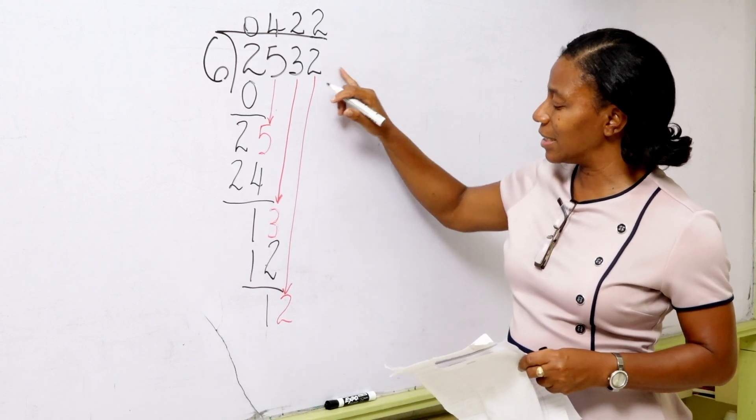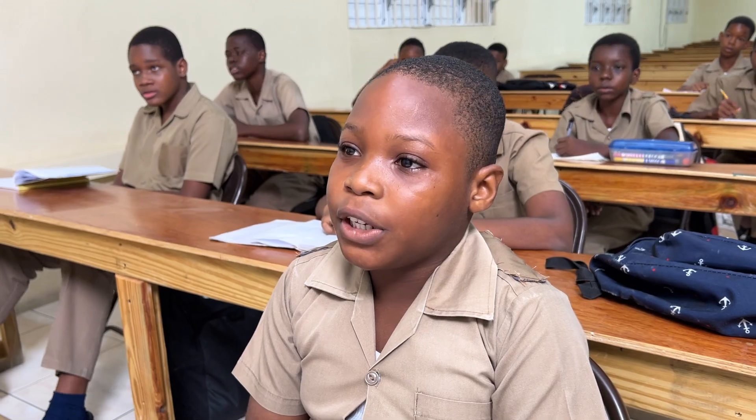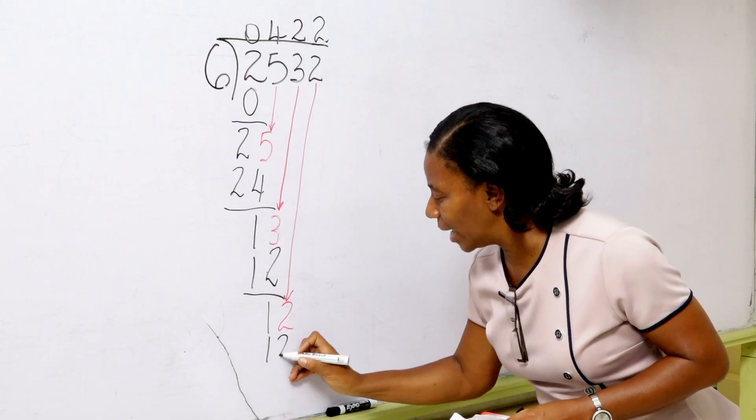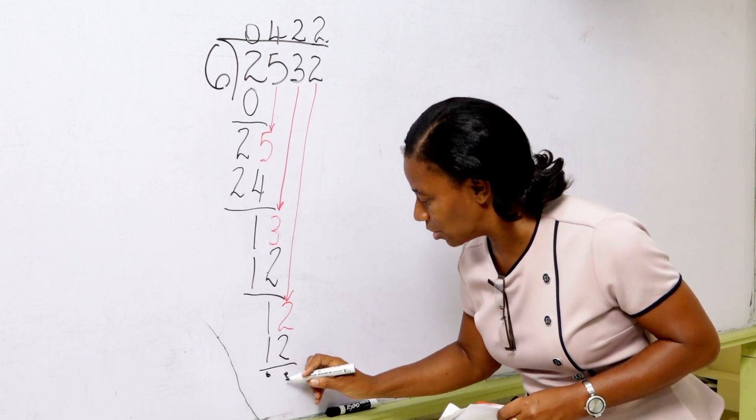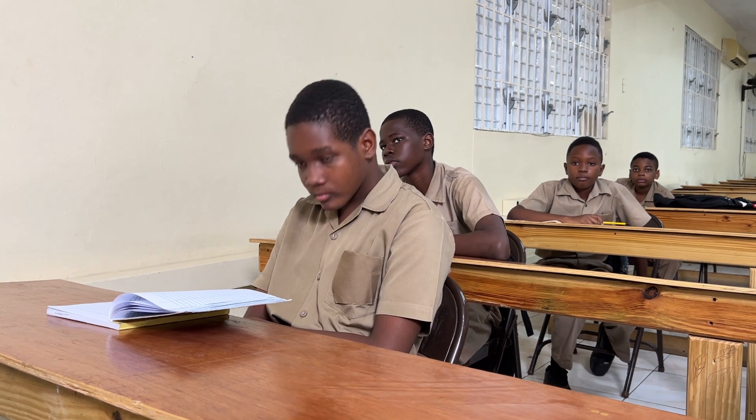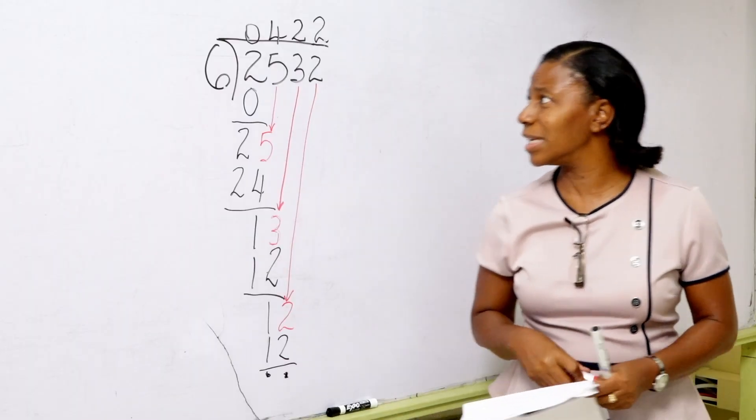Perfect. Do we have anything else here? 6 times 2? 12. And 12 from 12 gives us? 0. So we have nothing left to divide. Very good. Excellent.